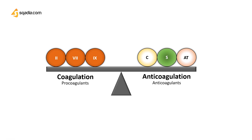In normal state, hemostasis is well regulated with the help of natural coagulants and anticoagulants. Natural coagulants are clotting factors or procoagulants, and natural anticoagulants are protein C, protein S, and antithrombin. If this balance is disturbed, it can lead to abnormal response or even diseases.